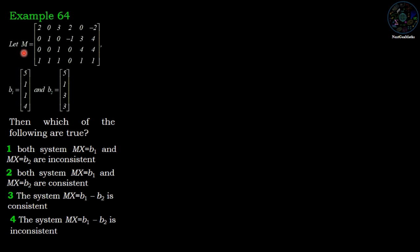In this example, M is a matrix, then we are given vector B1 equals [5,1,1,4] and B2 equals [5,1,3,3]. Then which of the following are true?